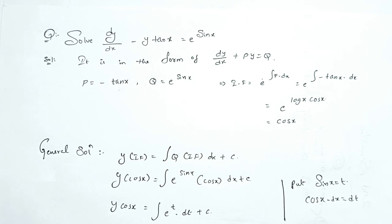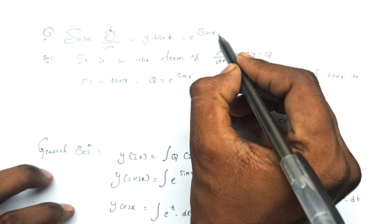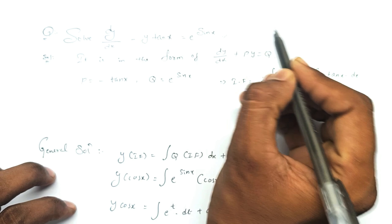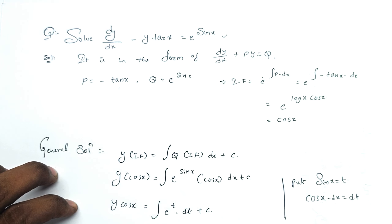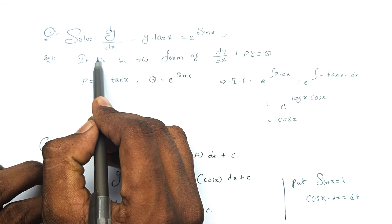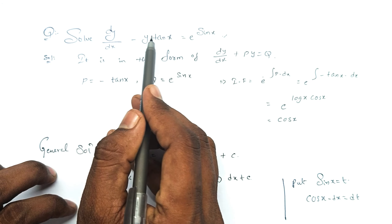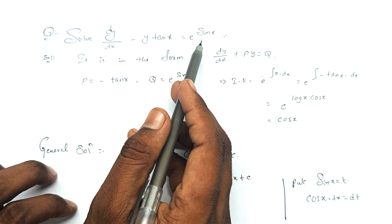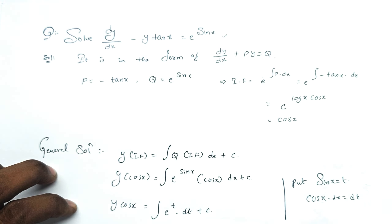The problem is: dy/dx minus y·tan x is equal to e^(sin x). Now, comparing with the standard form dy/dx plus Py equals Q.